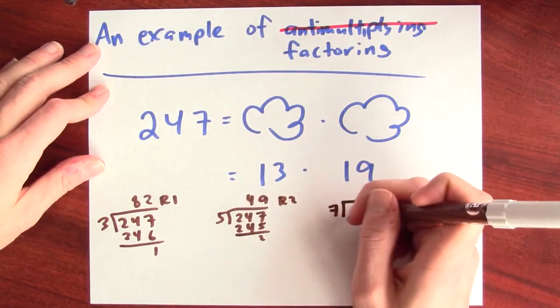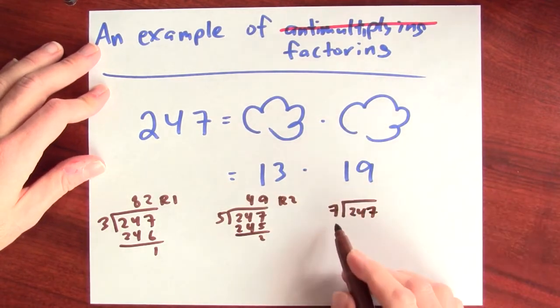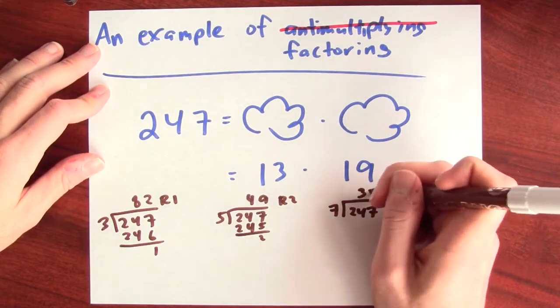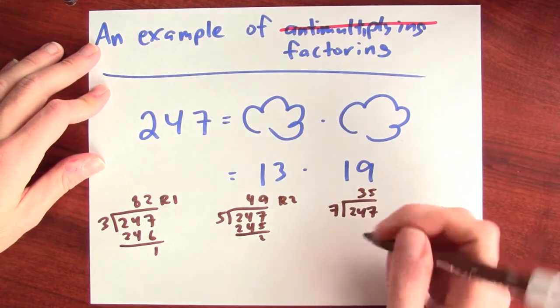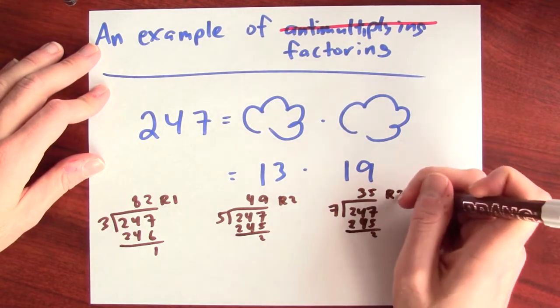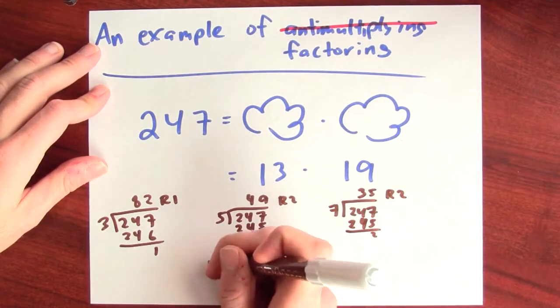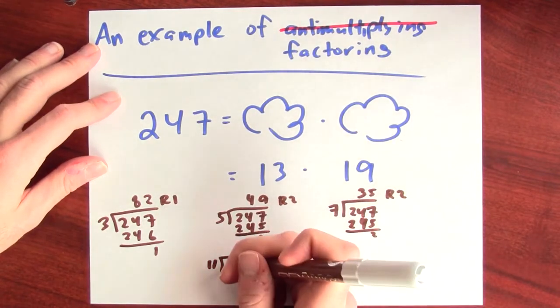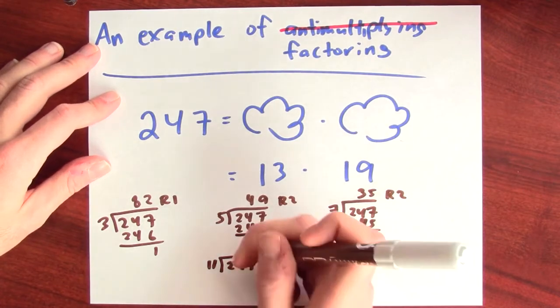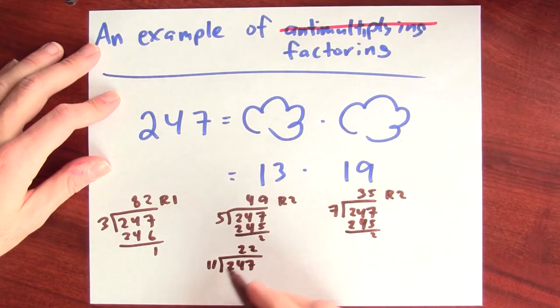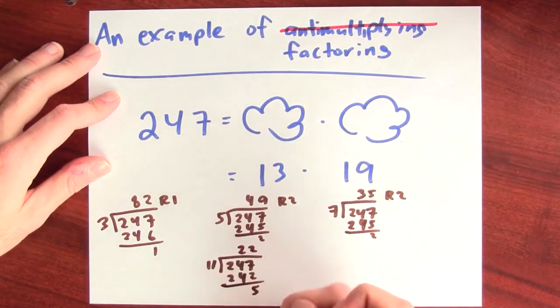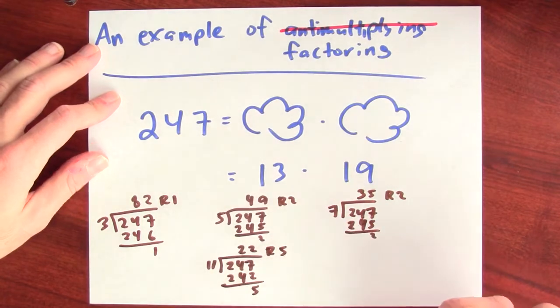Does 7 go into 247? That's a lot harder to see if 7 divides this number. 7 goes into this thing 35 times, but 35 times 7 is 245. So again, there's a remainder of 2. Does 11 go into this thing? Does 11 go into 247? It goes in there 22 times, but 22 times 11 is 242, which again leaves me with a remainder, in this case a remainder of 5.